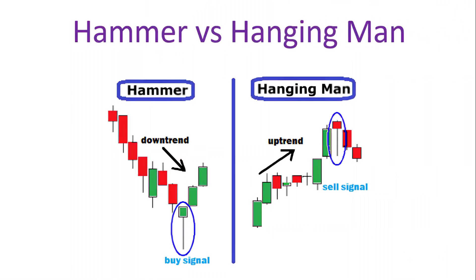The bearish hanging man, and the relatively bullish hammer. A distinguishing feature of the paper umbrella is its long lower shadow paired with a small upper body.